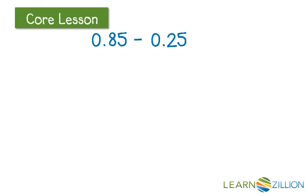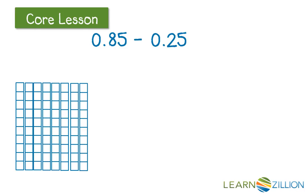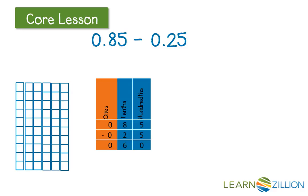Now let's give it a try with base ten blocks. I represent the 8 tenths in 85 with 8 rods, 8 of those tenths, and the 5 hundredths with 5 singles. I'll start by taking away the 5 hundredths. Then I'll take away the 2 tenths. What remains is 6 tenths and 0 hundredths.